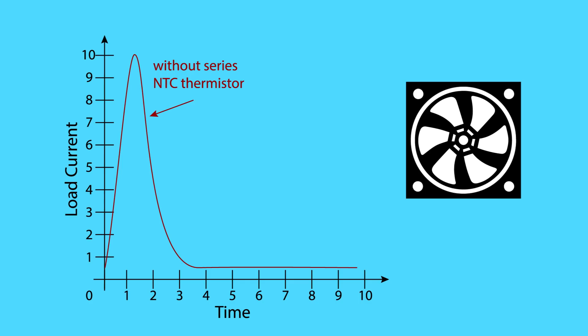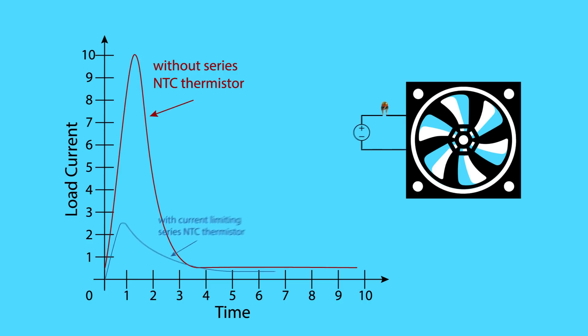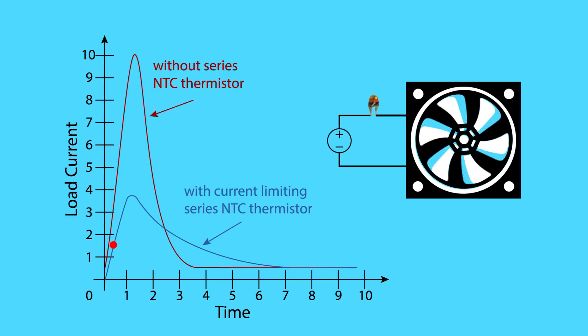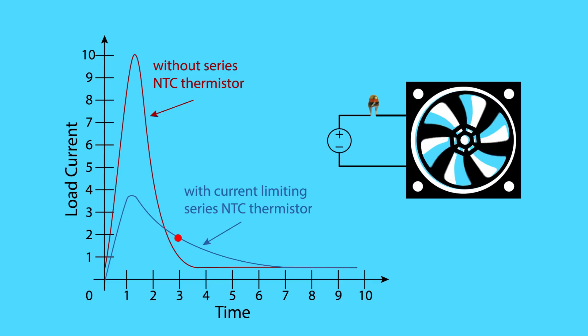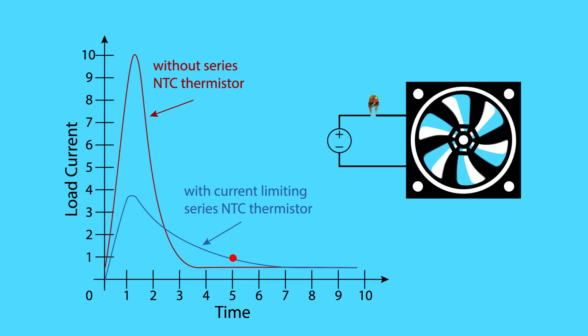NTC thermistors can also be used in series with a circuit as inrush current limiters. Inductive devices such as motors and transformers experience a high inrush current when they first turn on. When placed in series, the resistance of the NTC thermistor can restrict that inrush current. As the device runs, the current causes the NTC to heat up, lowering its resistance.